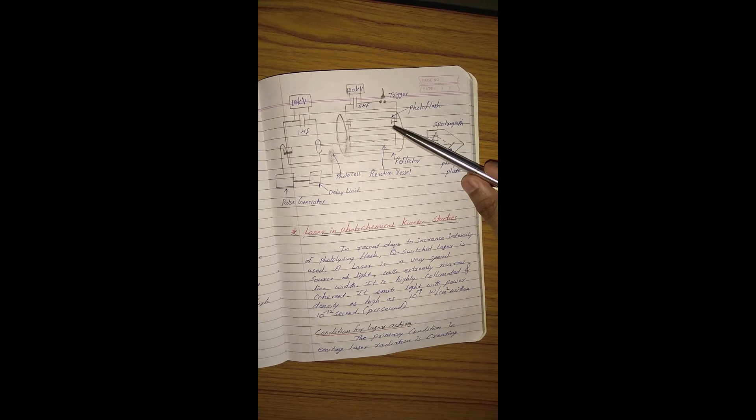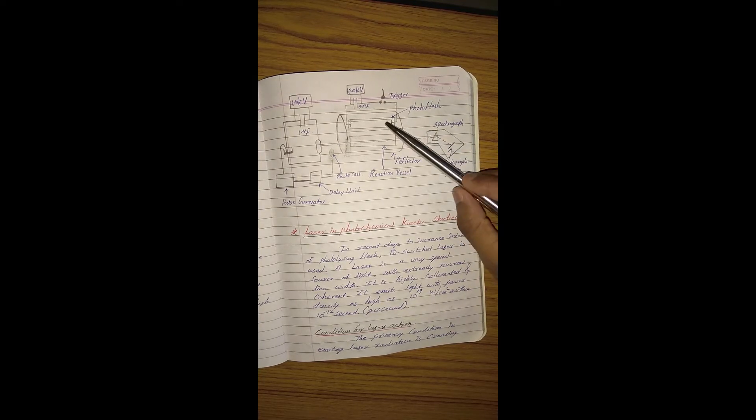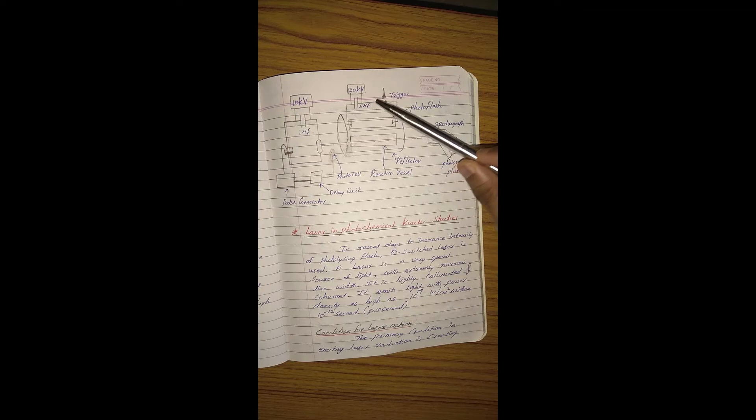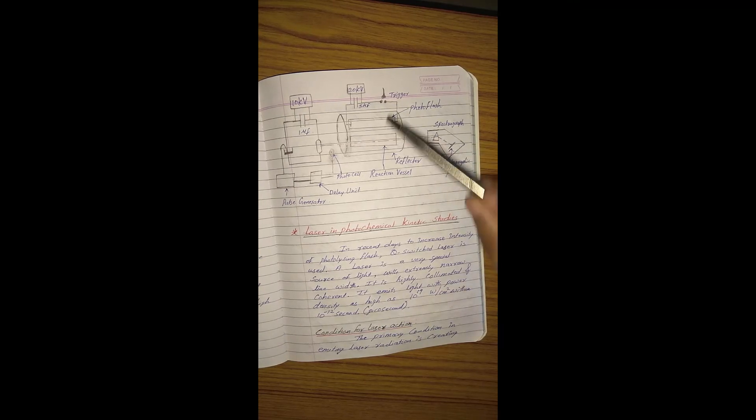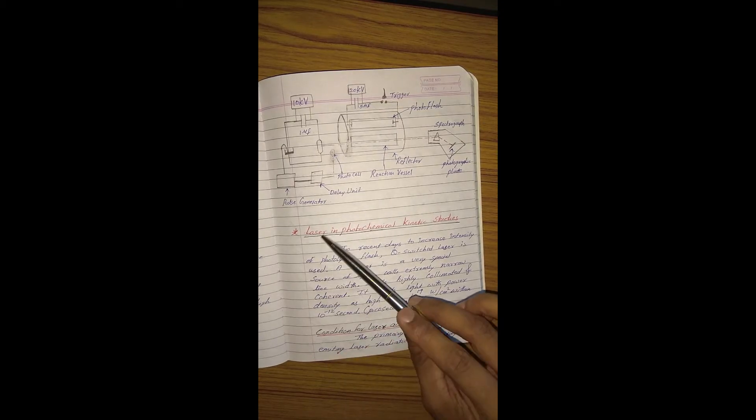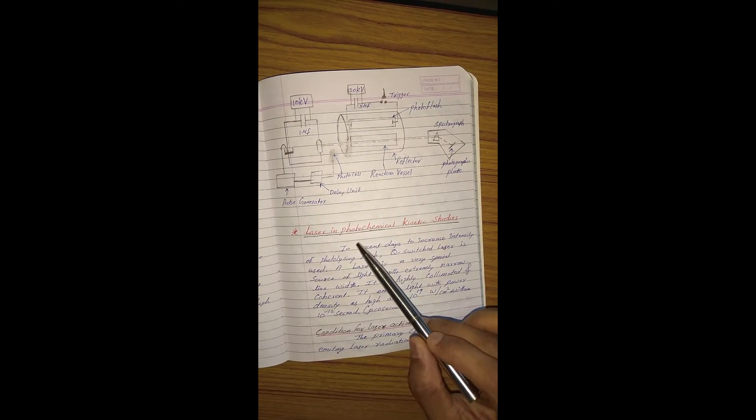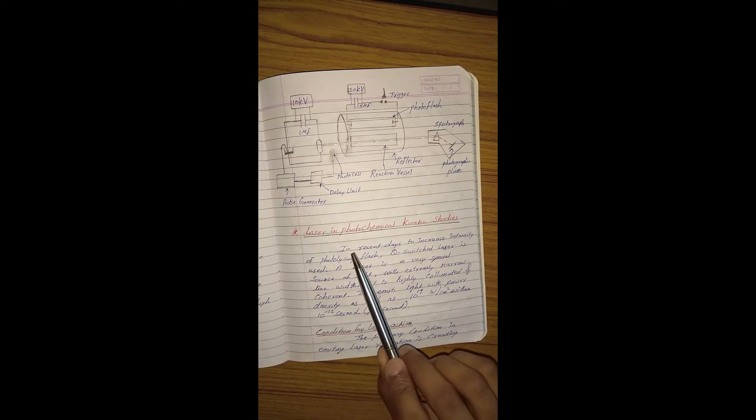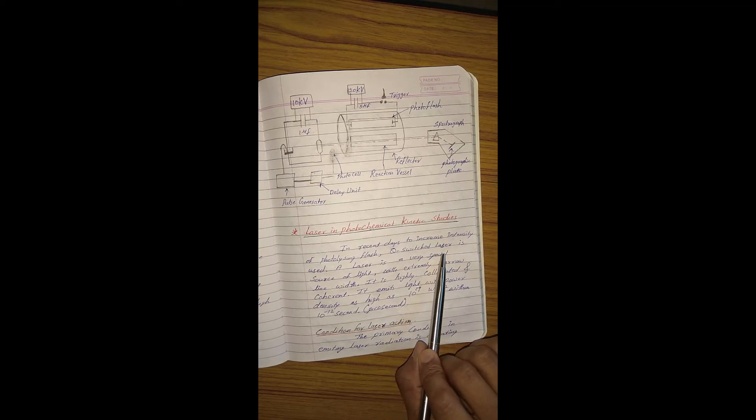We have discussed flash photolysis, and in flash photolysis we need a light which produces high intensity, but to generate high intense light we need high power. To overcome this, we can use laser light, as we know the laser produces more coherent light. In present days, to increase the intensity of photolytic flash, Q-switched laser is used.